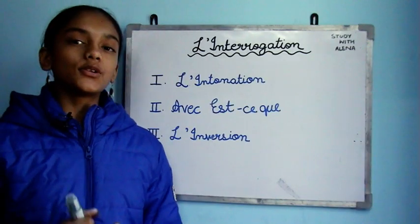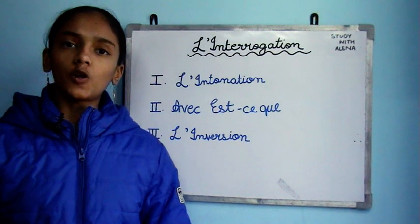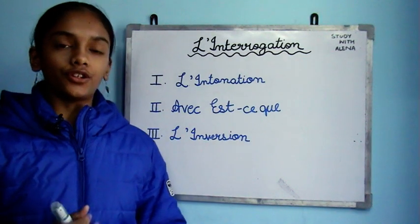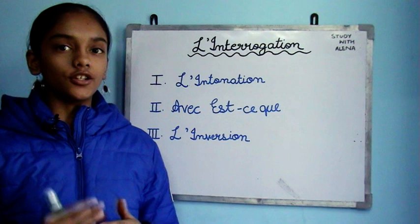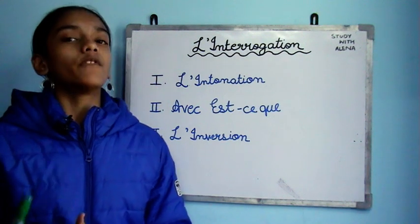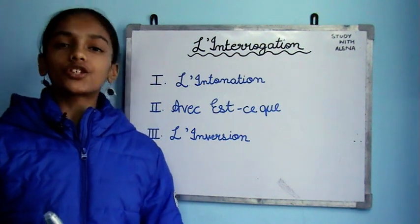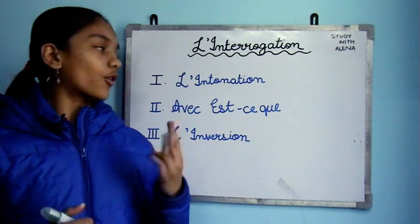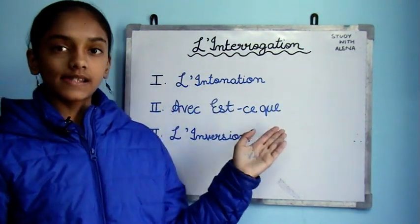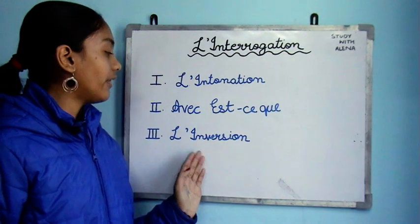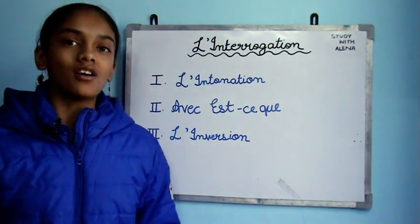First, let's understand what interrogation is. Interrogation means converting a sentence into interrogative form, which is asking a question. In French, we have three forms: l'intonation, avec est-ce que, and l'inversion. These are the three forms we use to do interrogation.